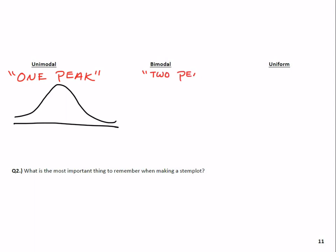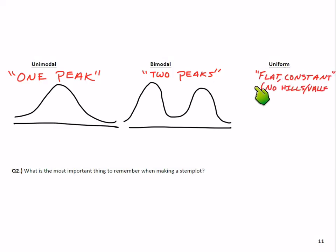Bimodal is two peaks. Uniform, though, that means uniform means the same throughout. You can think of it as a flat or constant distribution. There's no hills or valleys. It just starts here, stays the same height all the way, and then it's done. Kind of boring looking compared to the other two, but that's a uniform distribution. Unimodal, bimodal—there's no trimodal—and then there's uniform, the flat one. Now you've just boosted your vocab for when you have to describe distributions.